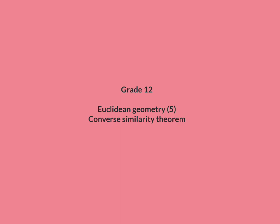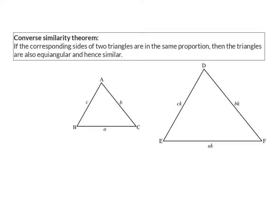In lesson 5 on Euclidean Geometry, we are going to have a look at the Converse Similarity Theorem. We now know that converse implies that the 'if' and 'then' parts of the similarity theorem simply swap around.